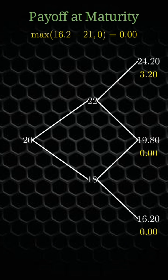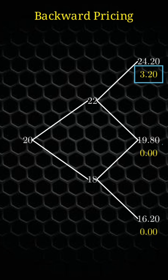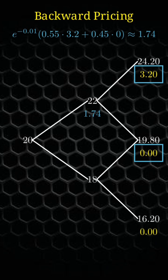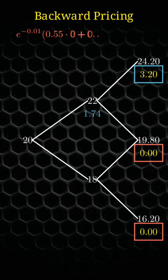Then we price backward using risk-free neutral valuation. Hence the price on the first period is given as indicated.